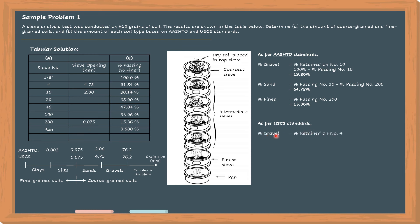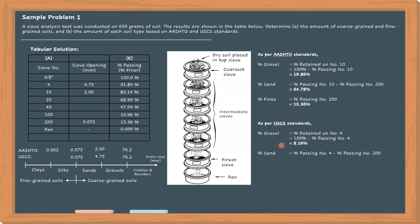As per USCS standards, the definition differs. In USCS, gravel is particles larger than 4.75mm but less than 76.2mm. The difference from AASHTO is that AASHTO uses 2mm as the limit while USCS uses 4.75mm. So, the percent of gravel equals 100% minus percent passing number 4: 100% minus 91.84% equals 8.16%.